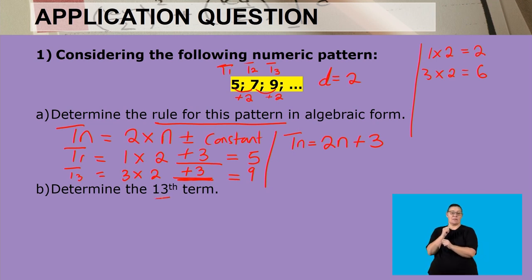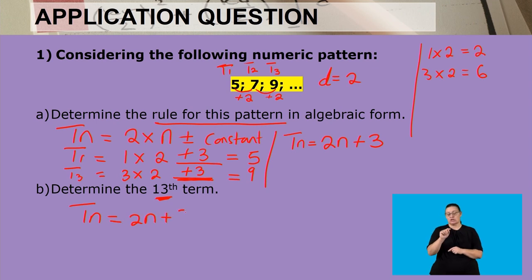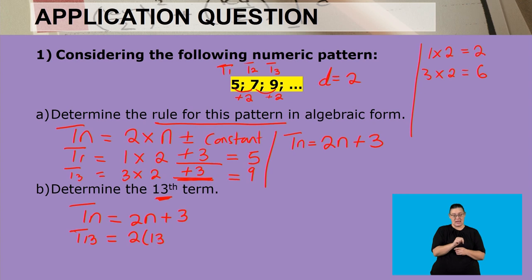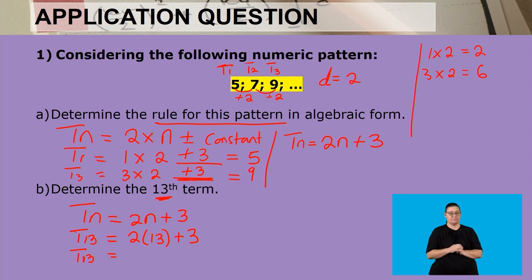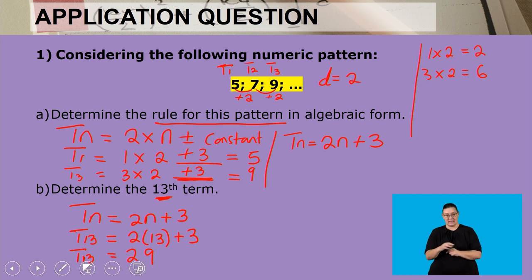Now let's determine the 13th term of this sequence using our rule. The 13th term means our term number n is 13, so we calculate 2 multiplied by 13, then add 3. Two multiplied by 13 is 26, and 26 plus 3 gives us 29. So the 13th term is 29.